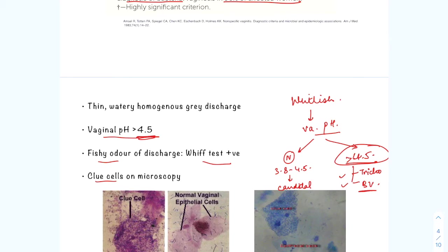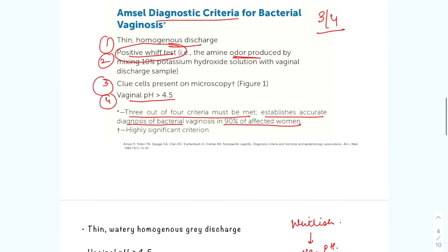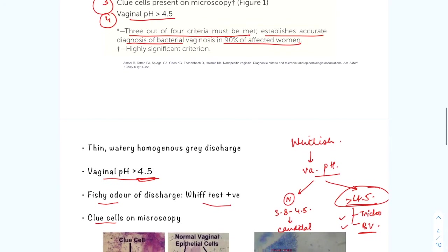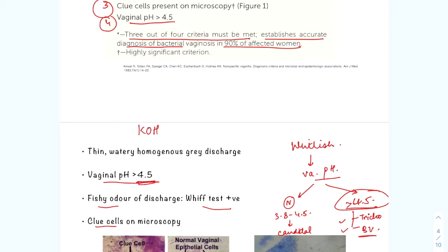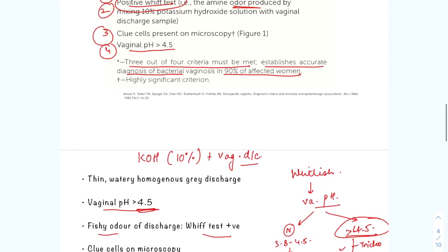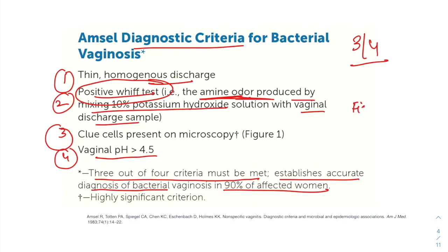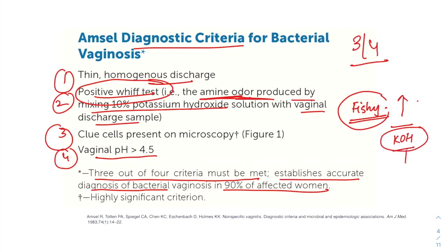The Whiff test is performed by adding several drops of 10% potassium hydroxide to the vaginal discharge. A strong fishy odour is indicative of a positive test result. Remember, the fishy odour is also present at baseline in bacterial vaginosis, but it increases in amount when potassium hydroxide is added. This is characteristic of bacterial vaginosis because of the anaerobes present. That increase on addition of KOH is the positive Whiff test.